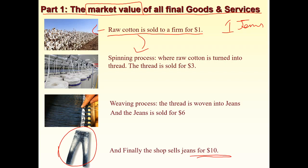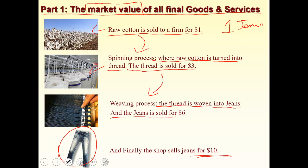The thread is sold for $3 to another firm involved in the weaving process. Through weaving, the thread is turned into jeans, which are sold for $6 to a seller in the market. The shopkeeper finally sells the jeans to the consumer for $10. So we have four different values: $1, $3, $6, and $10.